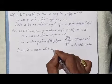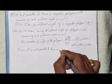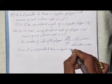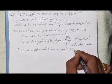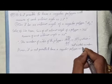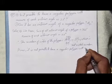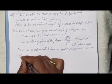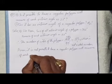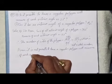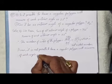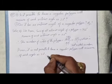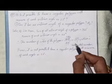Hence, it is not possible to have a regular polygon with each exterior angle measuring 22 degrees, because the number of sides comes out as a fraction.